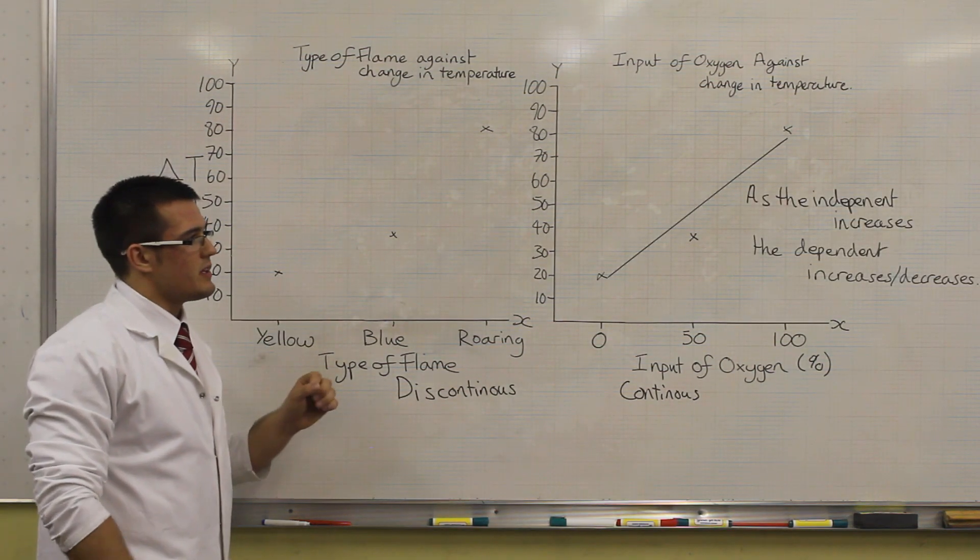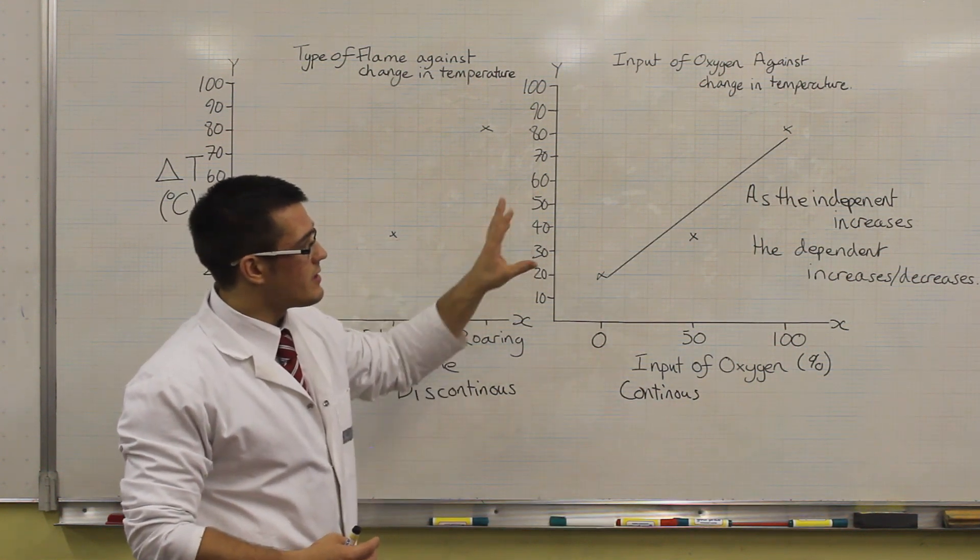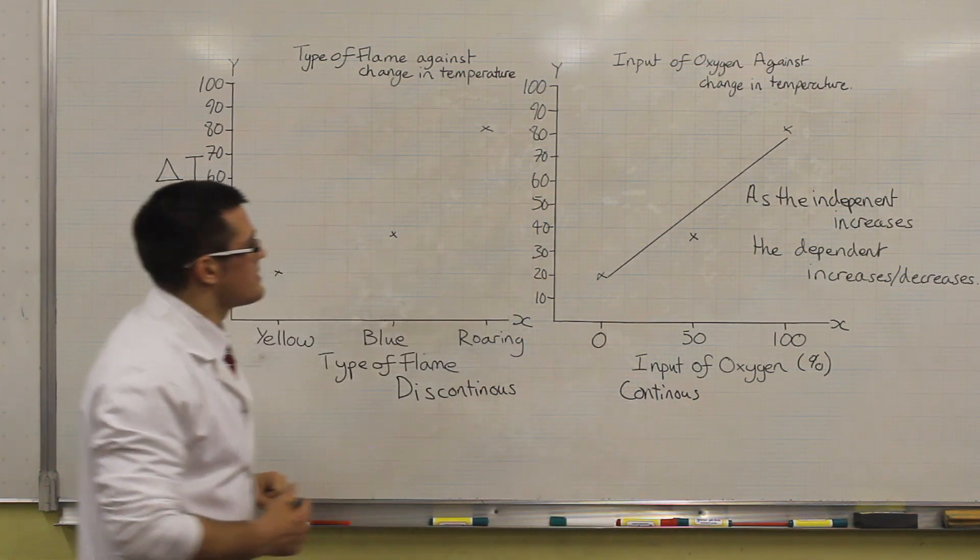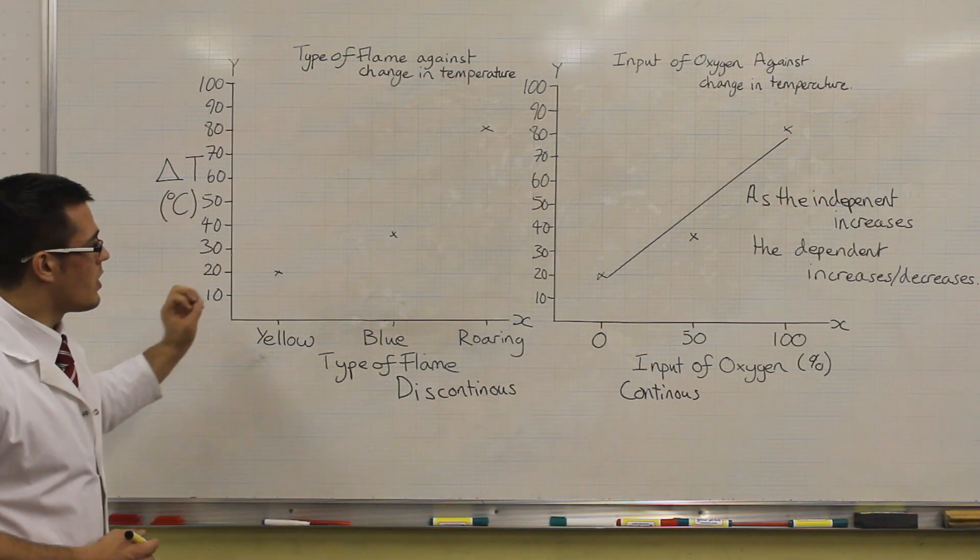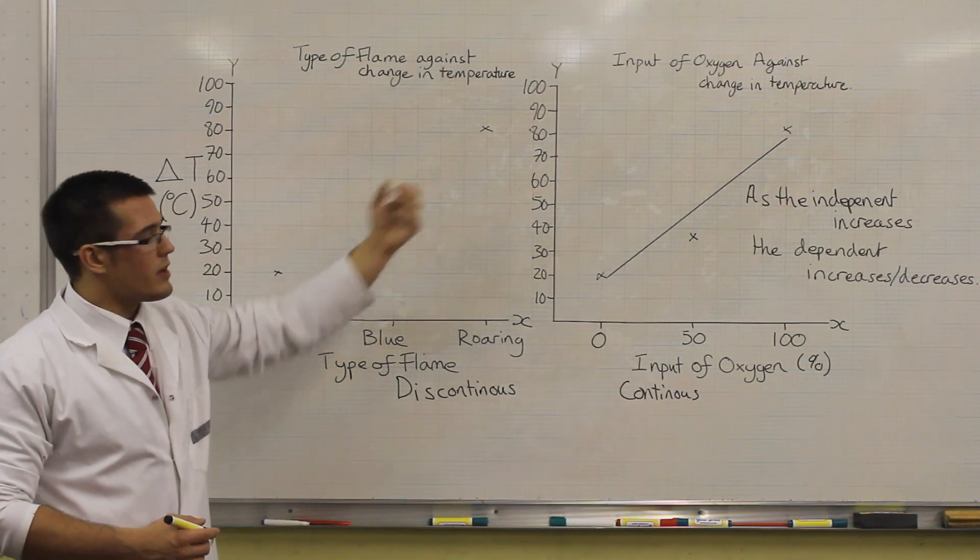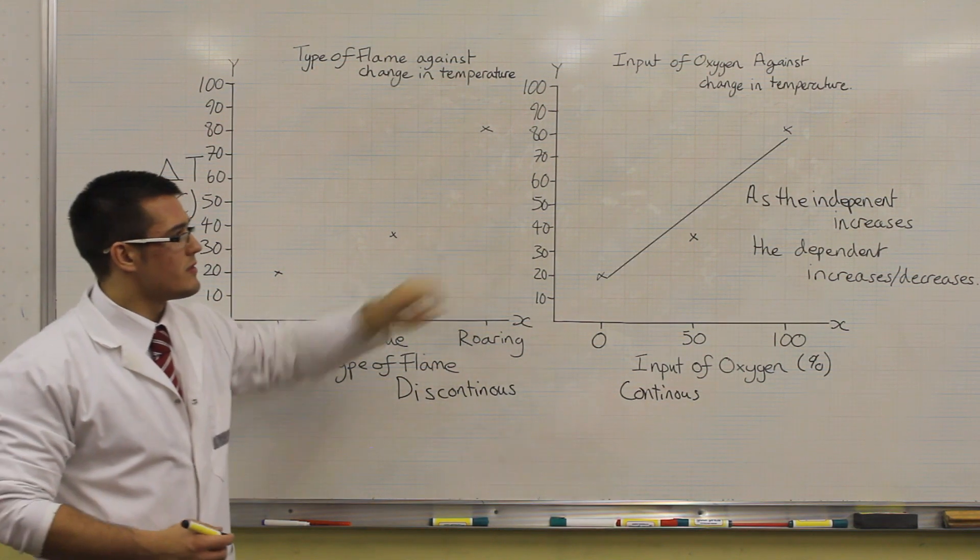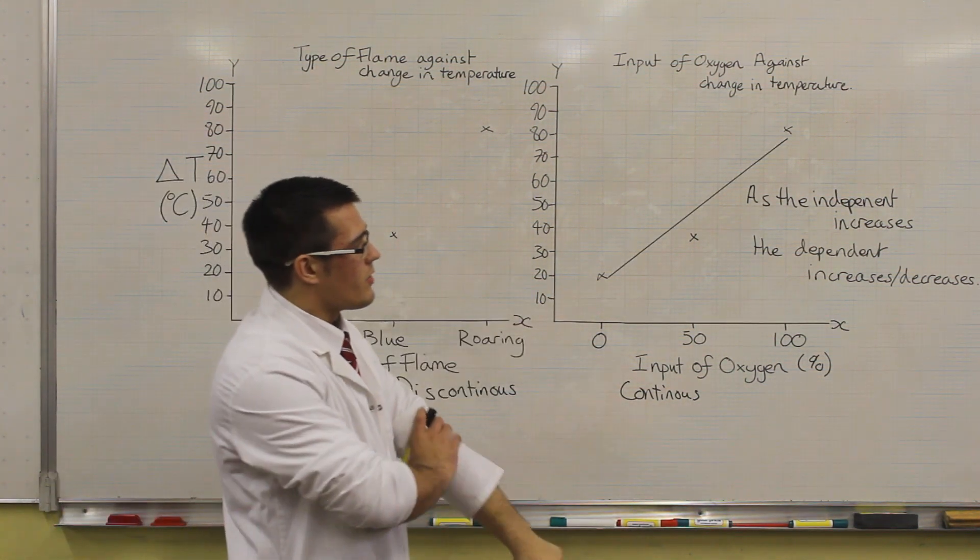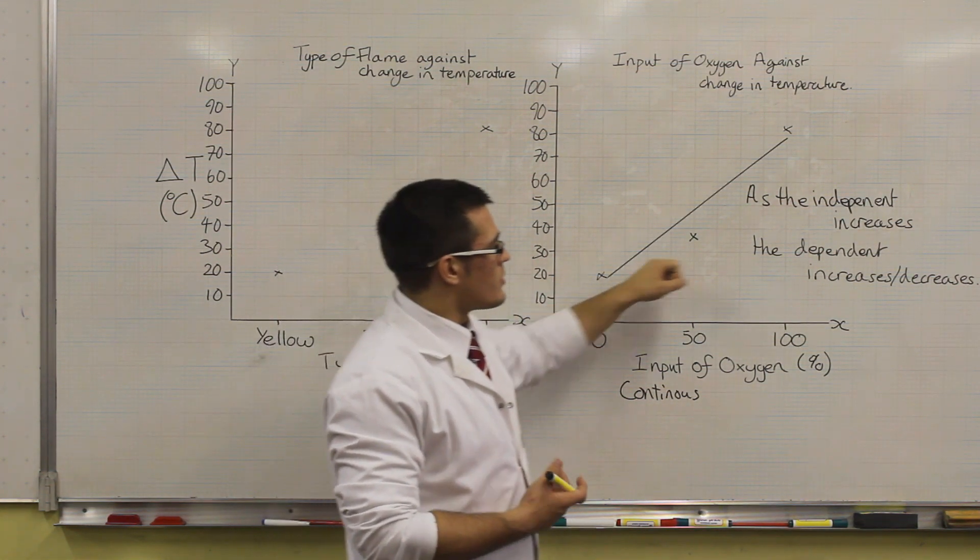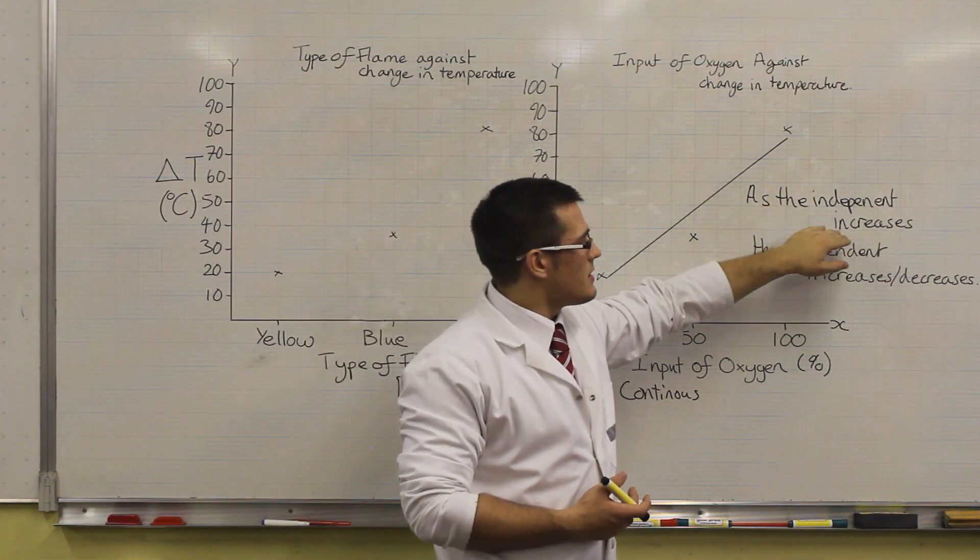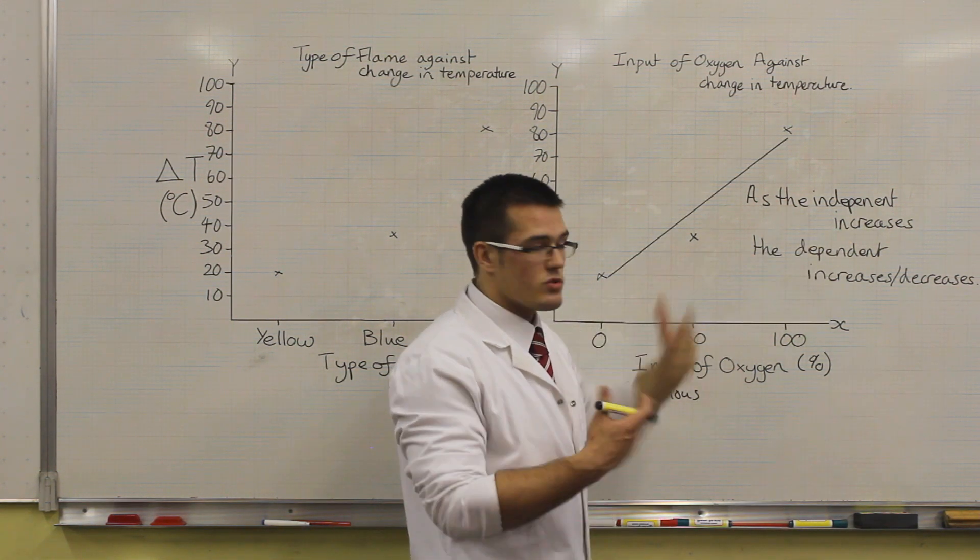Now that we've plotted our line of best fit, now we're free to say something far more quantitative about the trend or pattern in each of these pieces of data. For this one, because it's discontinuous, we can't describe a trend going across, but we can describe it, so we can say the difference between each of the flames. This one however, we can say something far more quantitative. The way we do this is simple. As the independent increases or decreases, what happens to the dependent? And we structure it in that way.